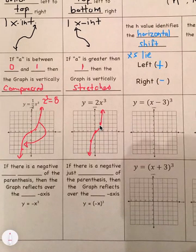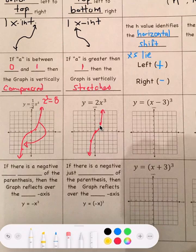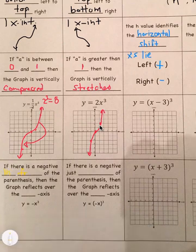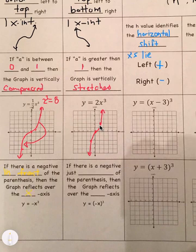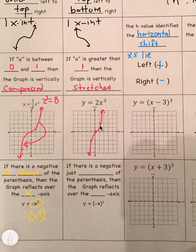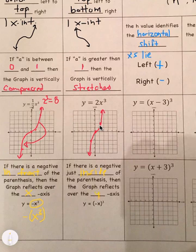If there's a negative in front of the parentheses — or just a negative x — the graph reflects over the x-axis. If there's a negative just inside the parentheses, the graph reflects over the y-axis instead. That means you would fold it over the y-axis rather than the x-axis.